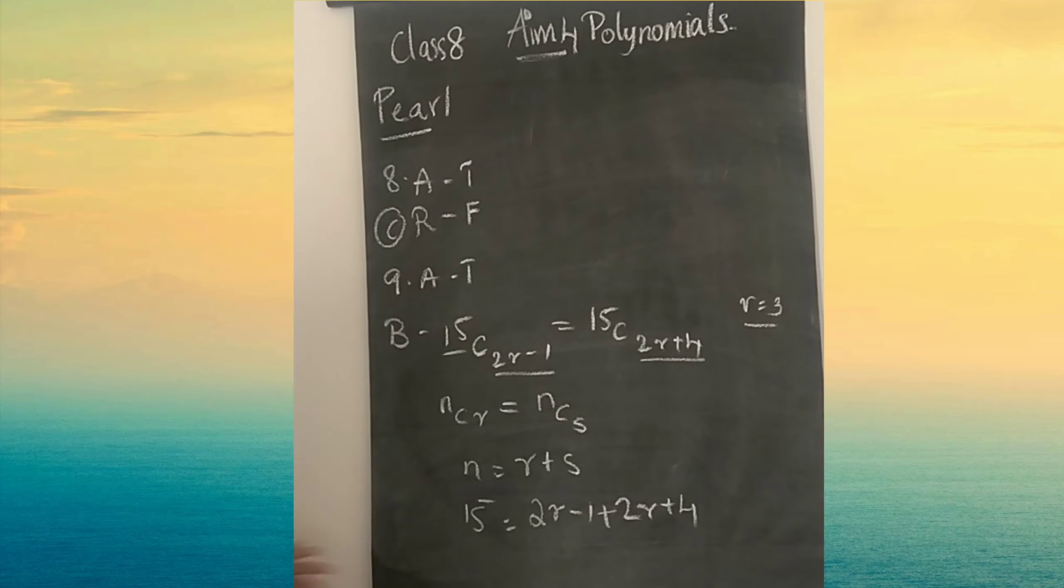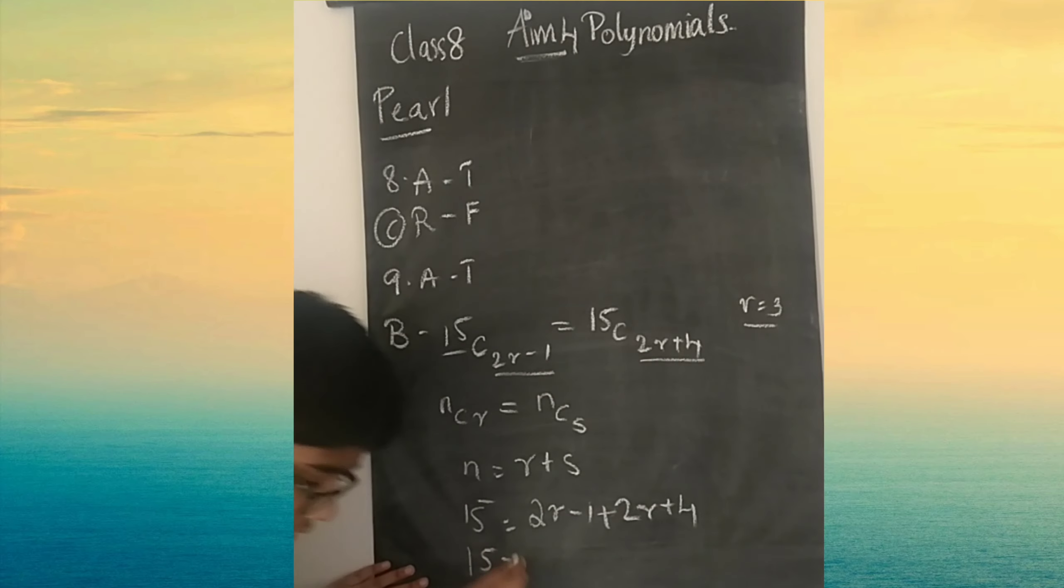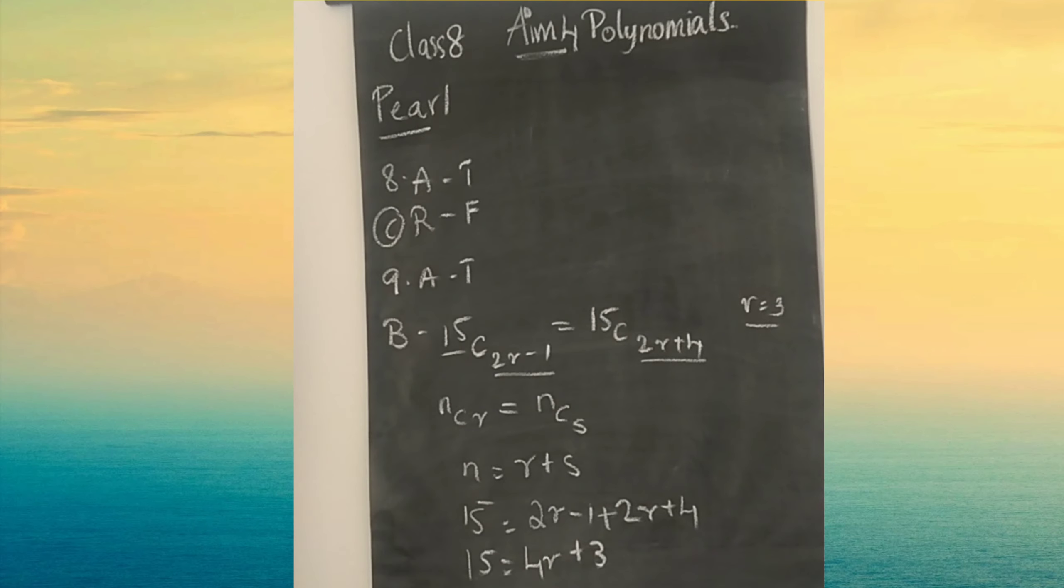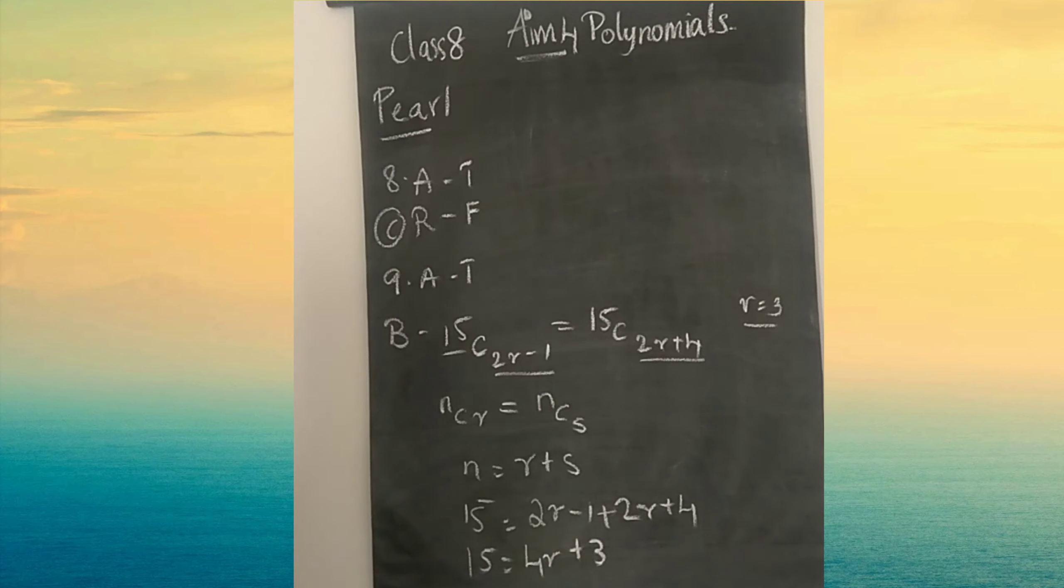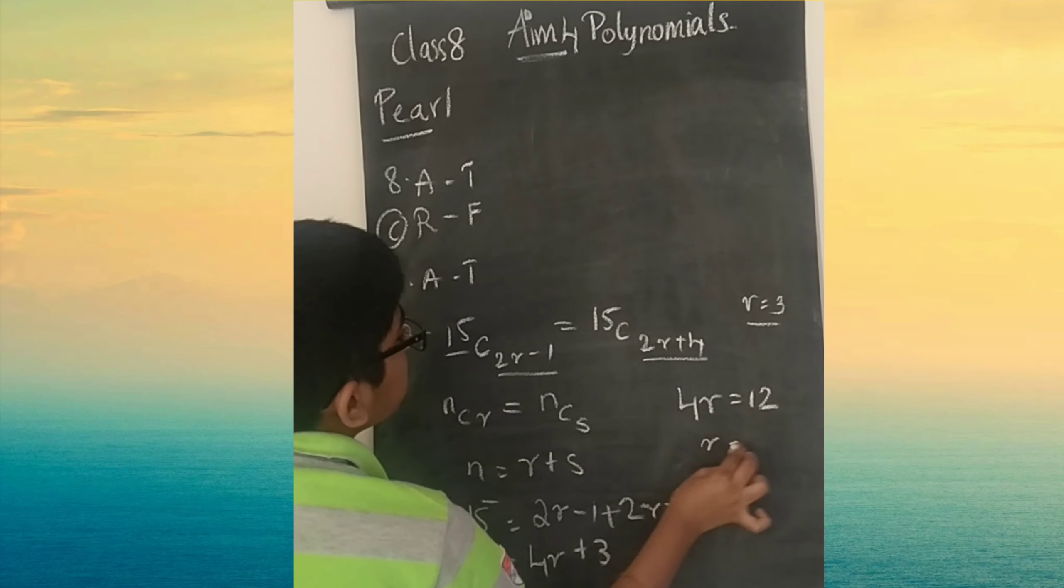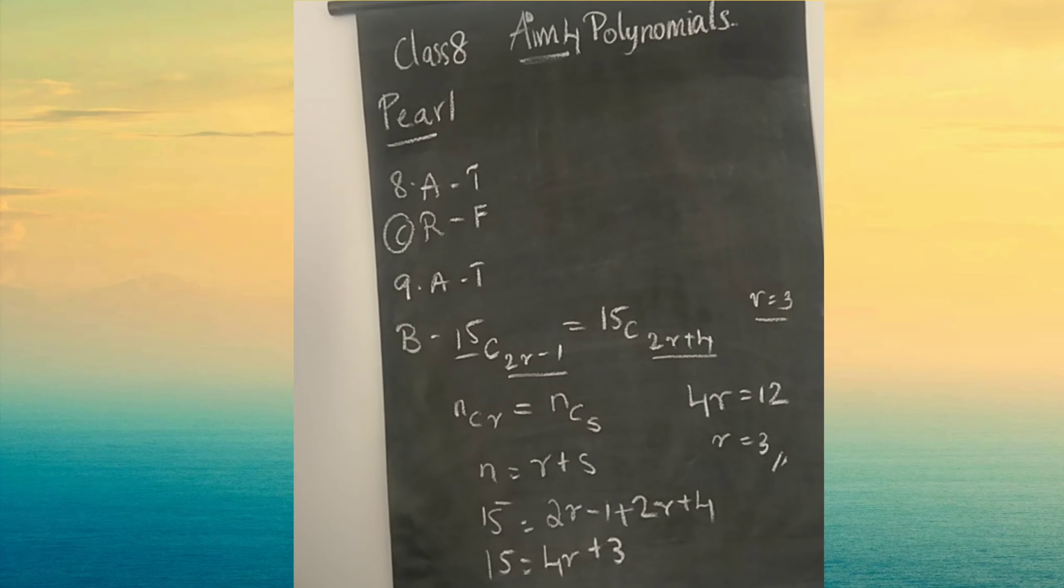When you do it, 15 equals 4R plus 3. Then 4R equals 12. R value is 3. So we found the value of R itself. It's correct, option A.